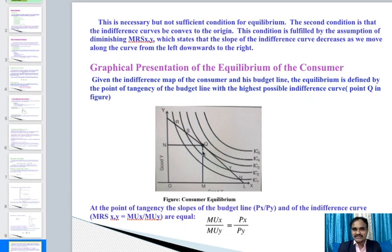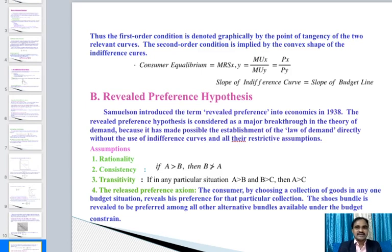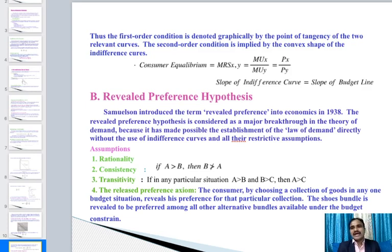In the diagram, the graphical presentation of consumer equilibrium shows that, given the indifference map and the budget line, equilibrium is defined by the point of tangency of the budget line with the highest possible indifference curve — point Q. At the point of tangency, the slope of the budget line Px/Py equals the MRSxy = MUx/MUy. The first-order condition is denoted graphically by this tangency point, and the second-order condition is implied by the convex slope of the indifference curve.